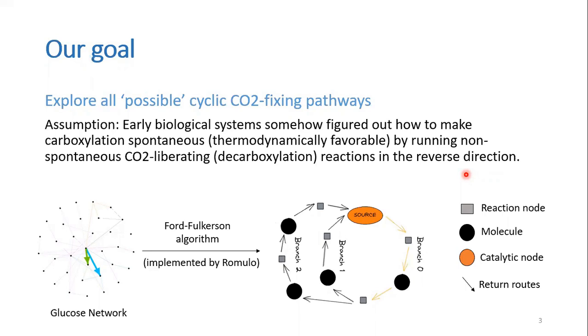Our approach was to use an imperative algorithmic script implemented by Romulo, a YSP from last year, to find this particular motif, where we have the catalytic node or the source of the cycle embedded in the main cycle with two possible return routes to reproduce it. We ultimately had to find if there is a spontaneous motif like such with CO2 in one of the return routes.